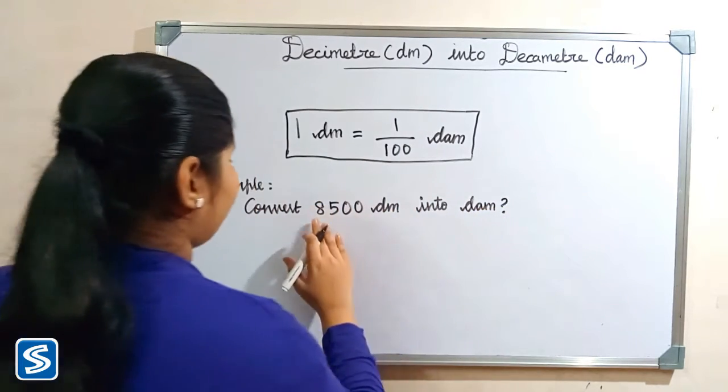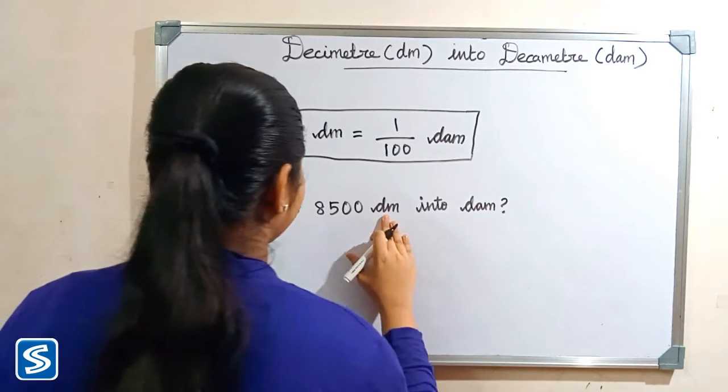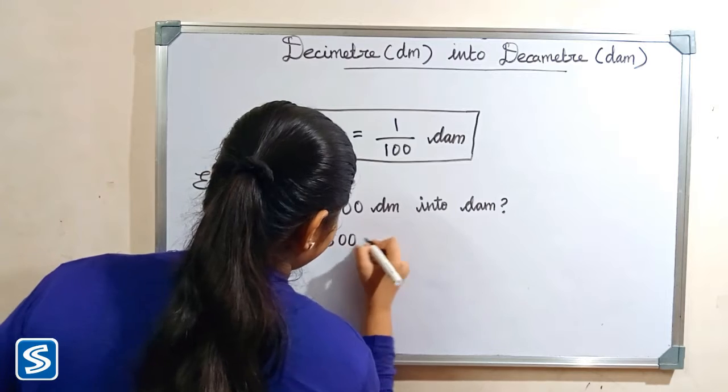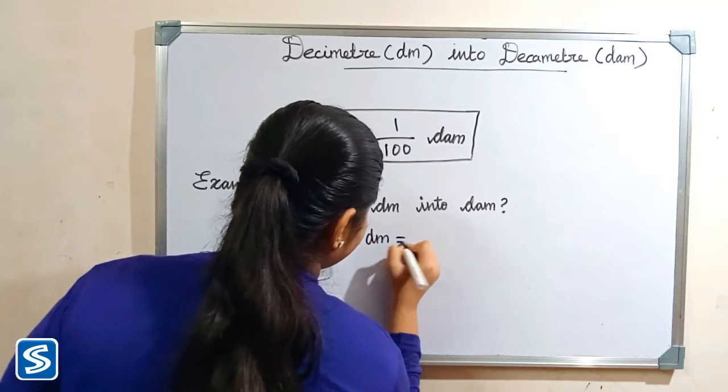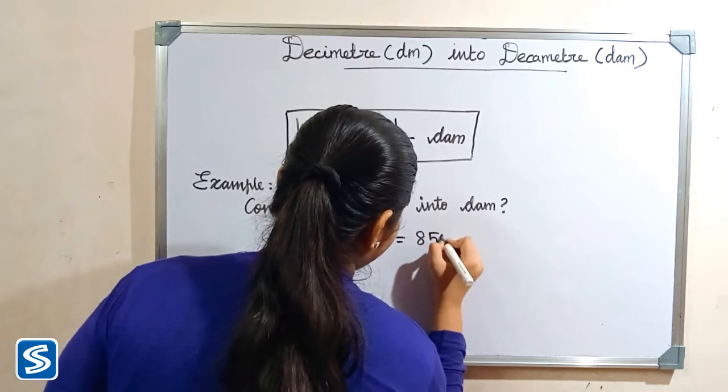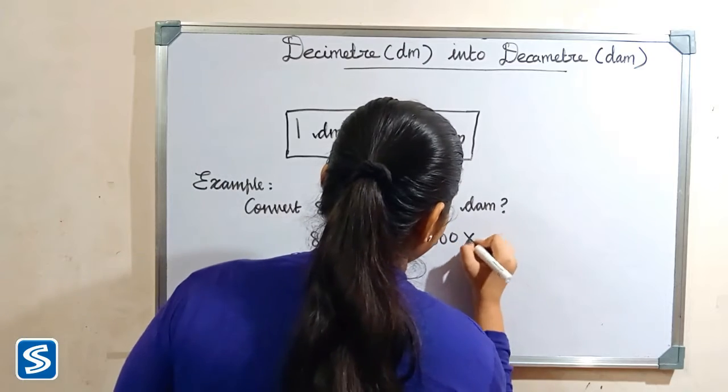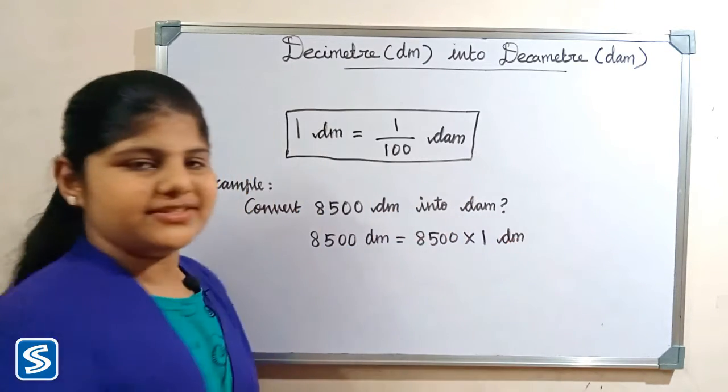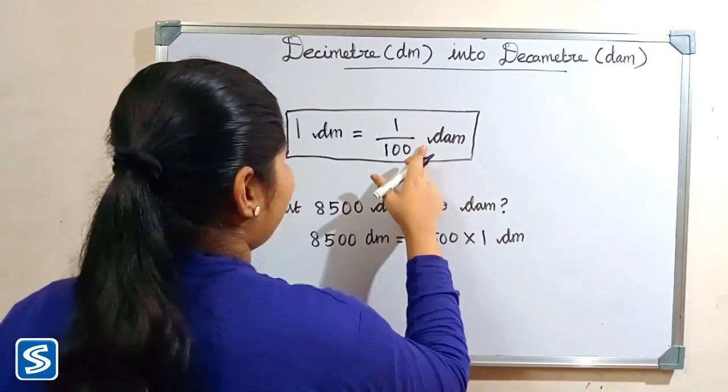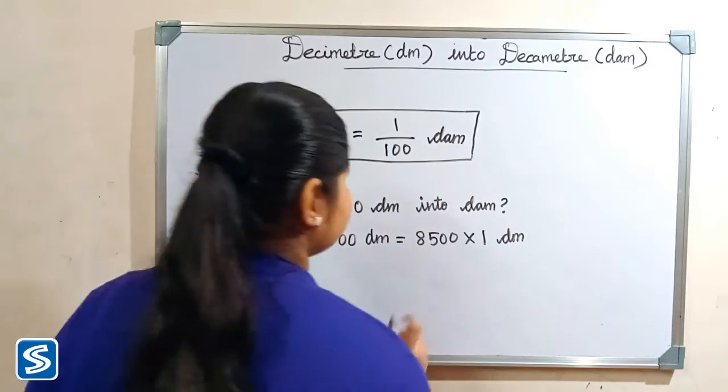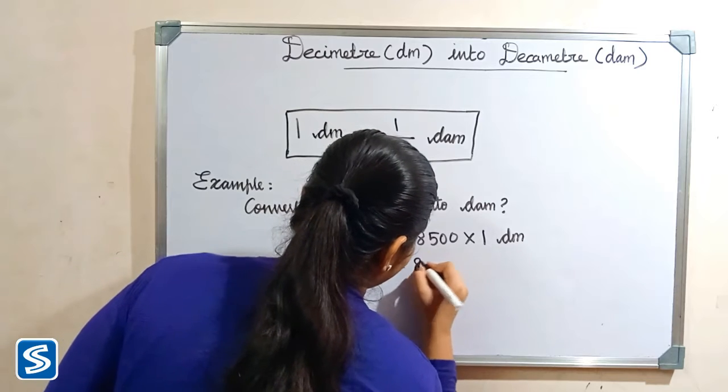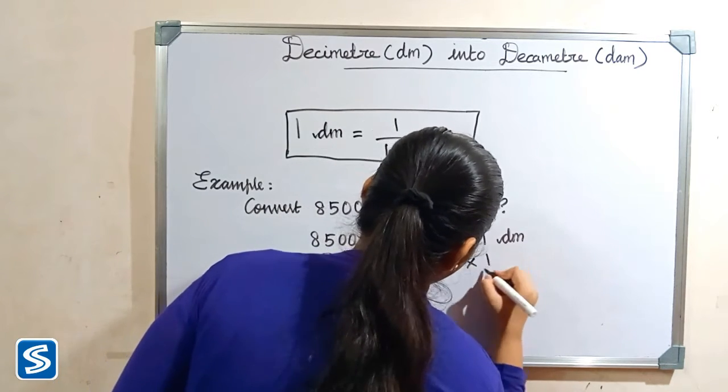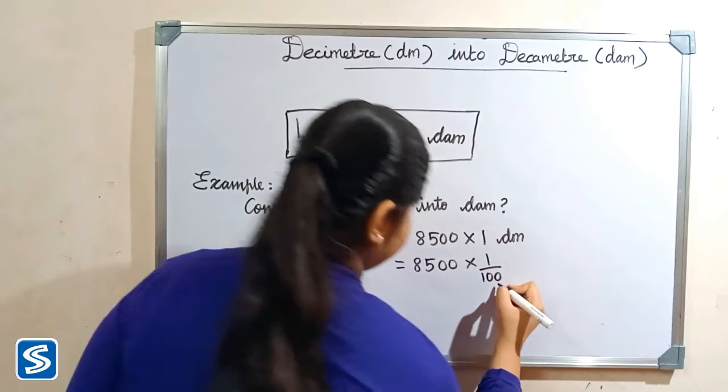So 8500 decimeter can be written as 8500 multiply 1 decimeter. Now we have to substitute 1 by 100 decameter in the place of 1 decimeter. So 8500 multiply 1 by 100 decameter.